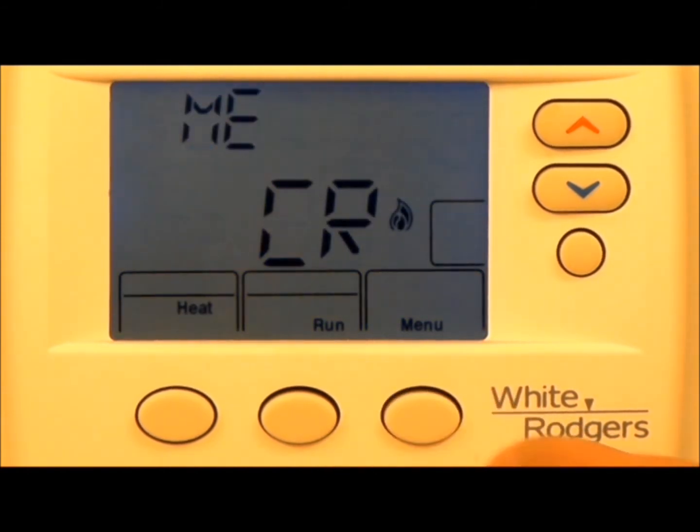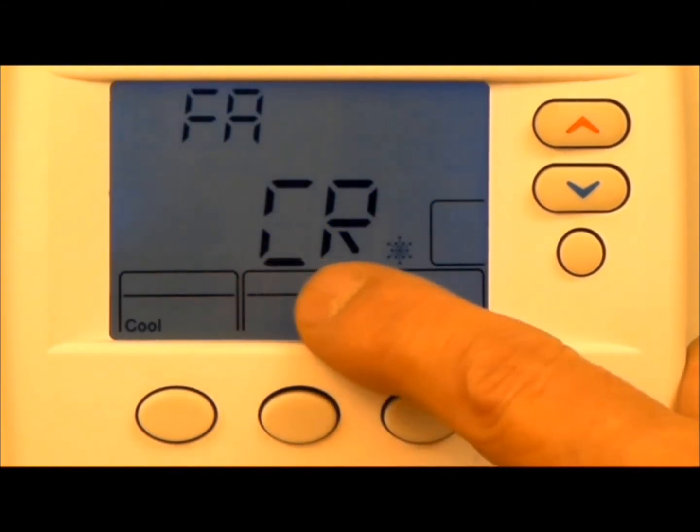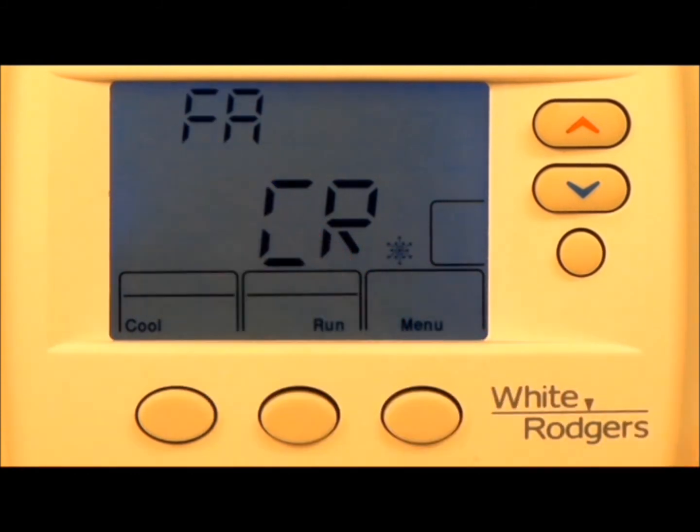Menu again. Feature 3. These are acronyms for cycle rates. The next two values I show you should never be changed. The cycle rate for heat will always stay at medium and the cycle rate for air conditioning should always stay at fast.